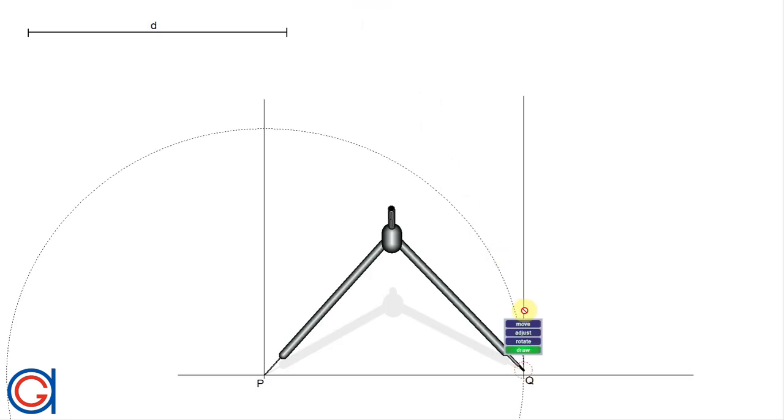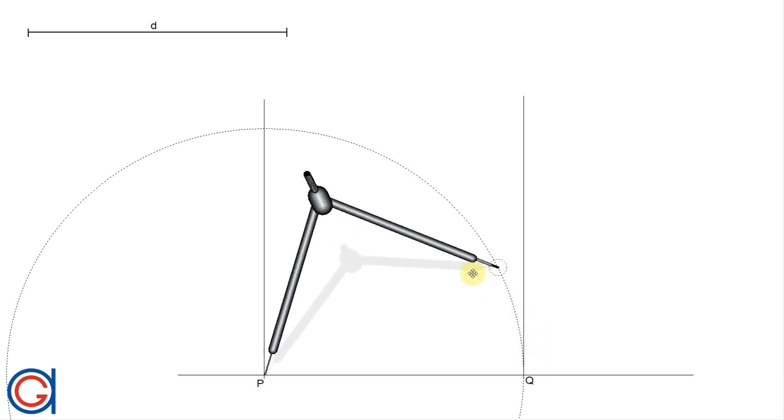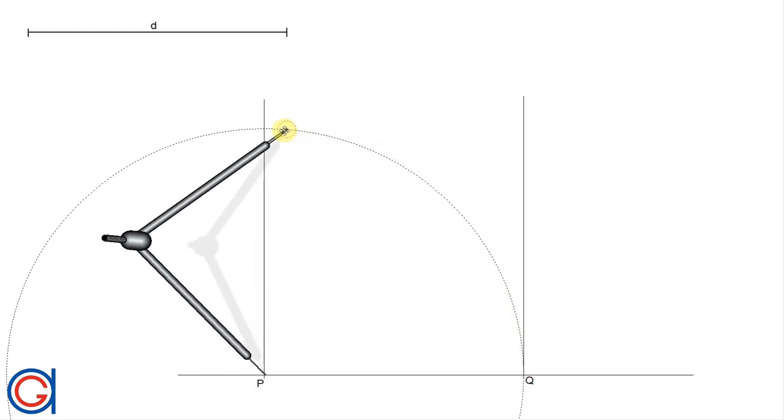And now, with our compass set to the length d and setting on vertex P, we scribe an arc until it cuts our previously drawn perpendicular line at a third vertex of our square.